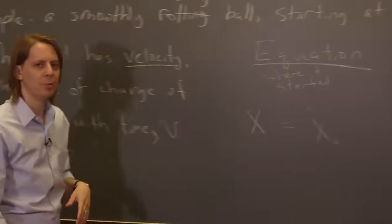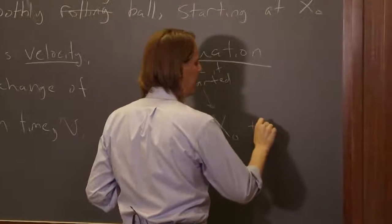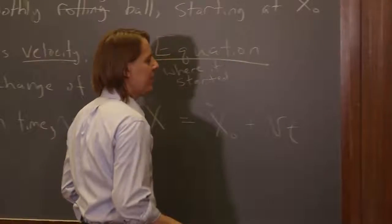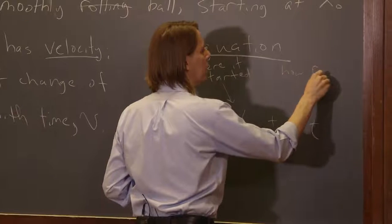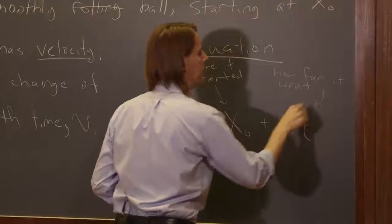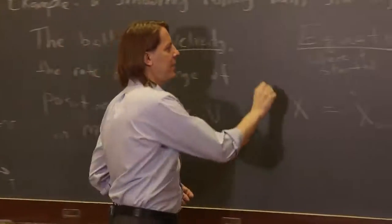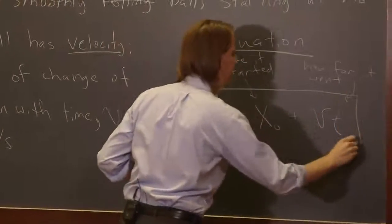And it equals that x-naught, that's where it started. You might call it its initial position, x-naught. And then you have to add how much further it went, which is equal to v times t. So there's some simple descriptions of the two terms: x equals x-naught plus v times t.